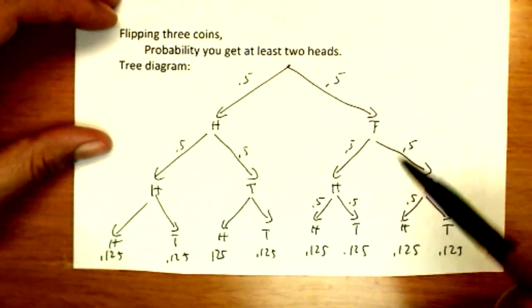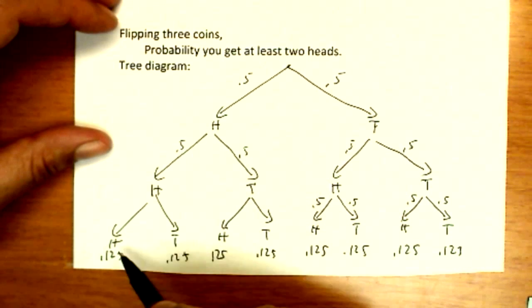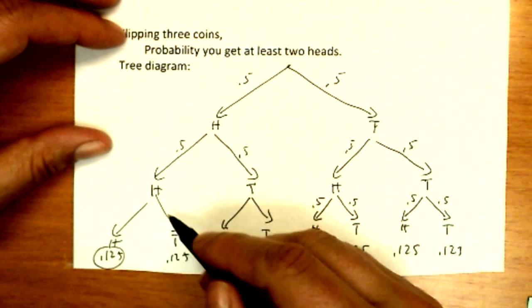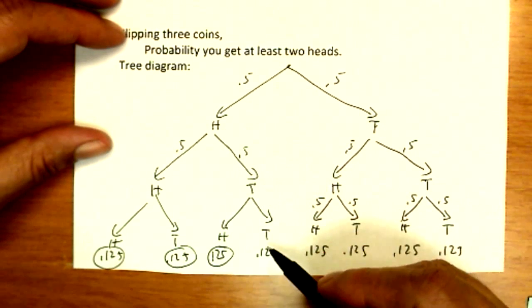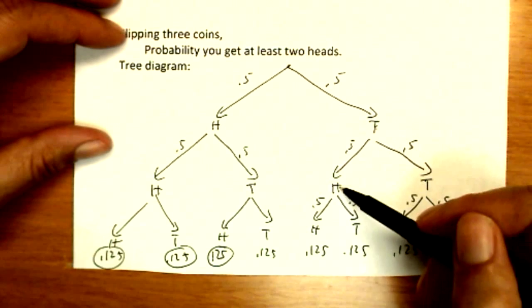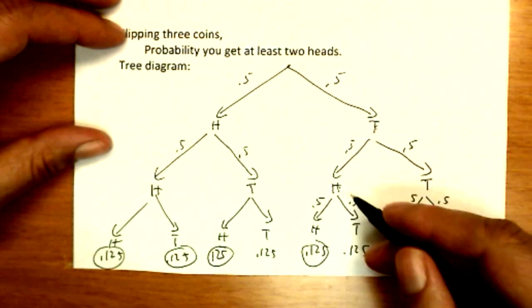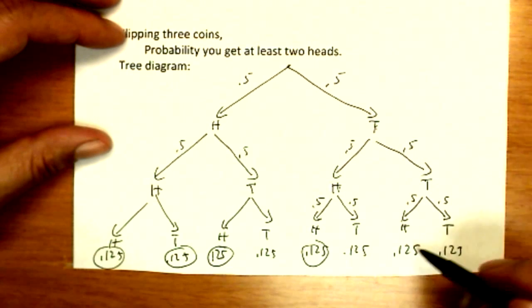So the probability of getting at least two heads. Well which one of these have two heads? Well this has three heads, so that certainly counts. Head, head, tails has two heads. Head, tail, head also has two heads. Head, tail, tail does not. Tail, head, head, two heads on the way there. Tail, head, tail, no. Tail, tail, head, and so on. None of these two.